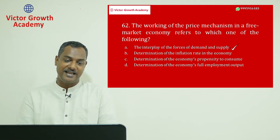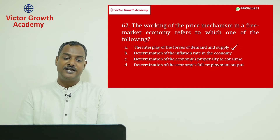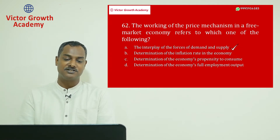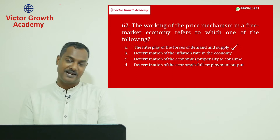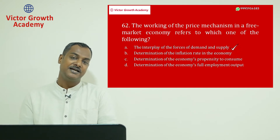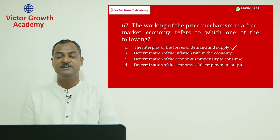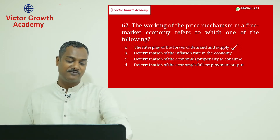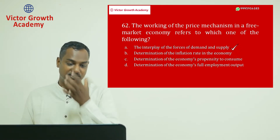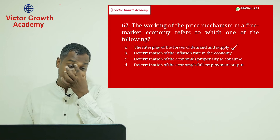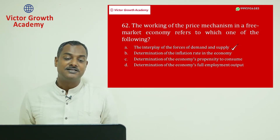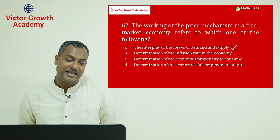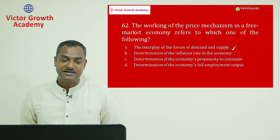The answer to question 62 is A: the interplay of the forces of demand and supply. In demand and supply there is a process — we call it the invisible hand. Who is determining the price of a commodity? It is the demand and supply which is creating it. So the price mechanism is the interplay of forces of demand and supply, also known as the invisible hand.